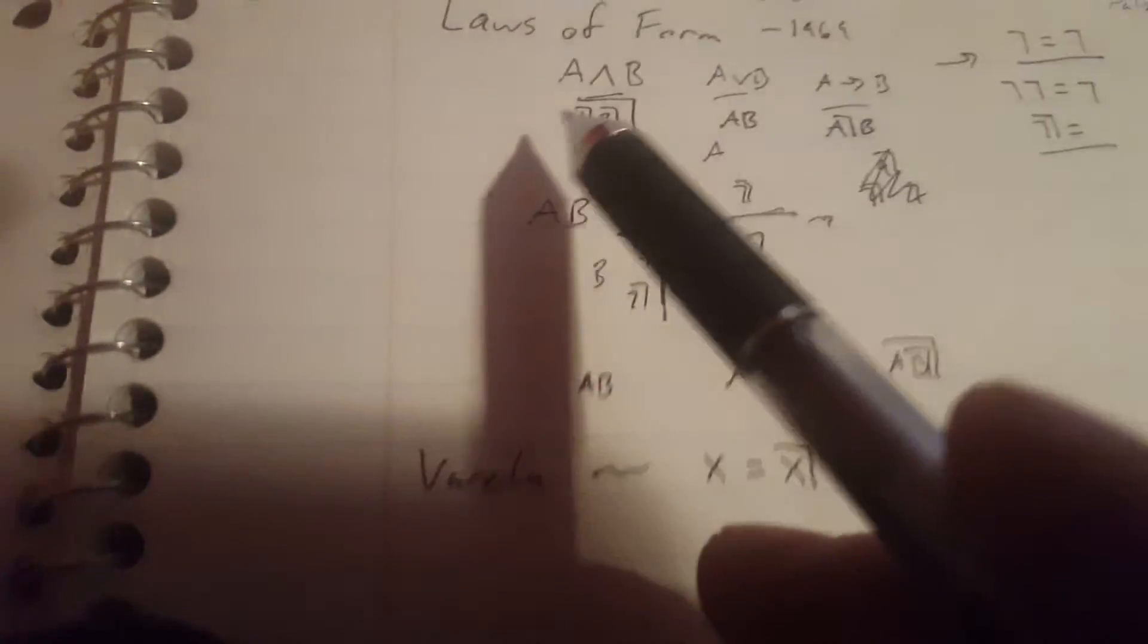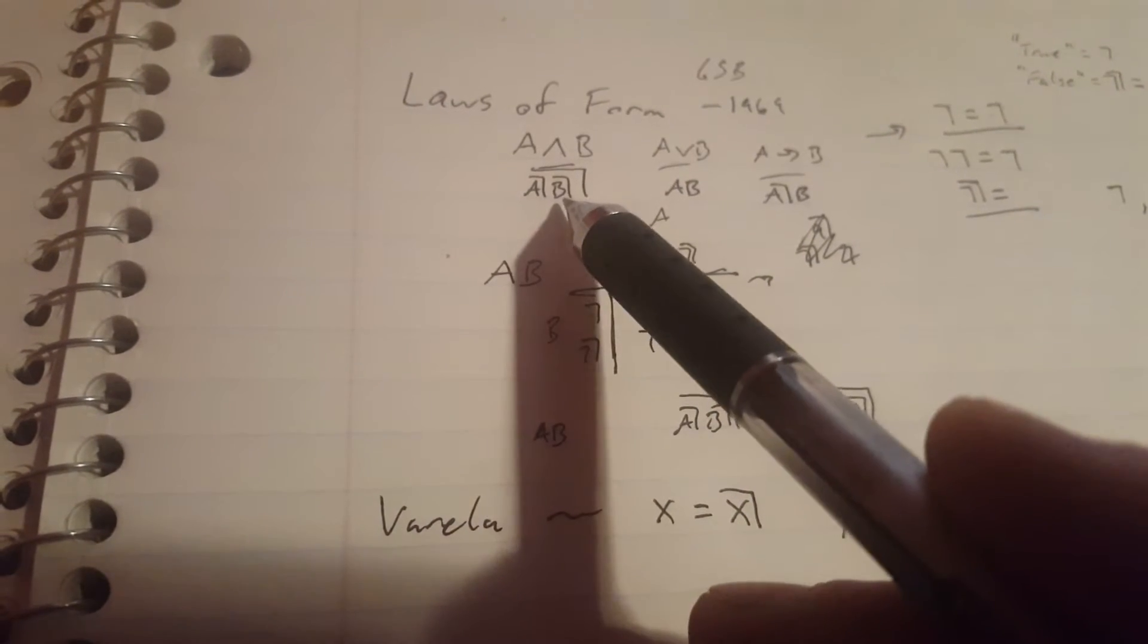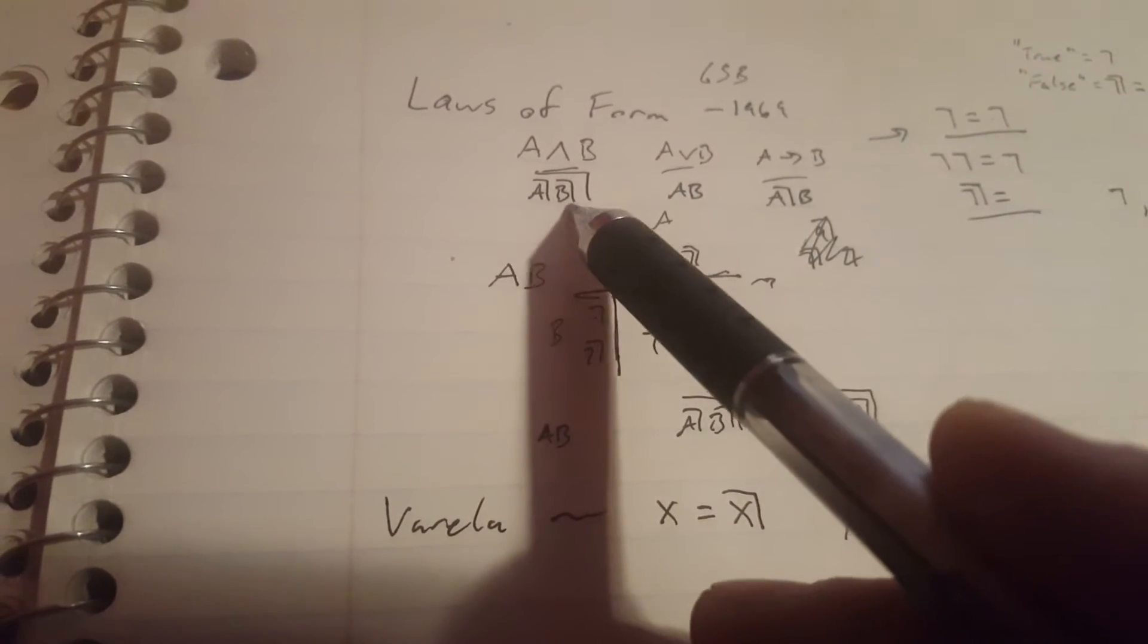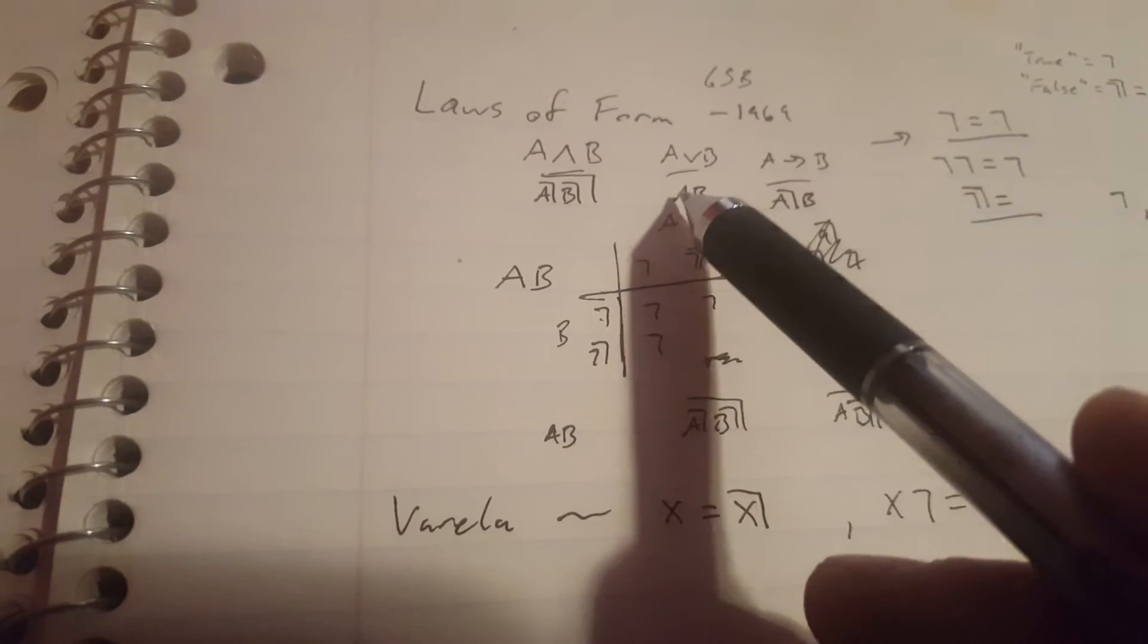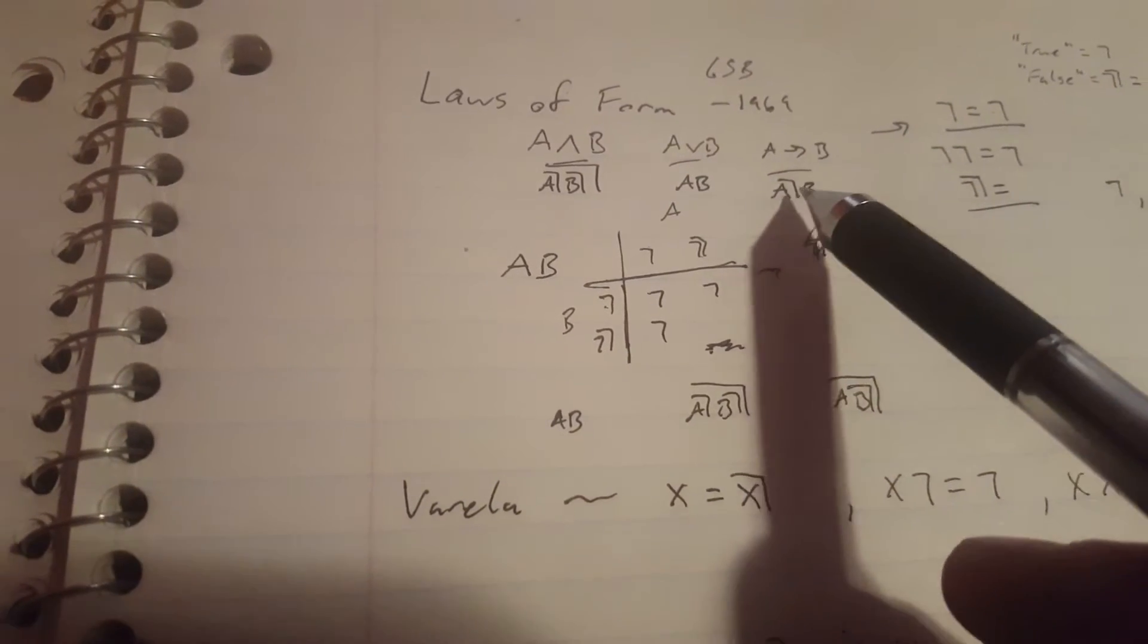So in that system, A and B look something like this, both A and B in the entire form are marked. A or B is just A and B adjacent to each other. If A then B looks something like this.